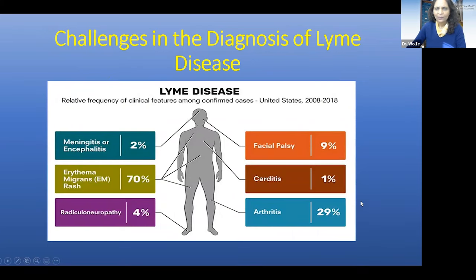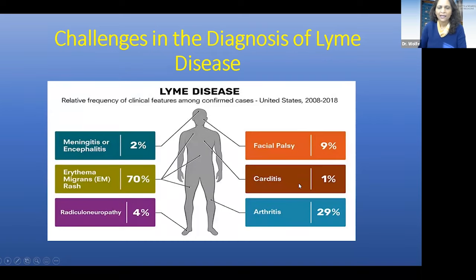In terms of the clinical manifestations, the most common is the erythema migrans rash, which is seen in 70% of patients, followed by arthritis, and then some of the neurologic complications like facial palsies, neuropathy, and meningitis. Carditis is fairly uncommon, but we do see it and it's important to look for it.